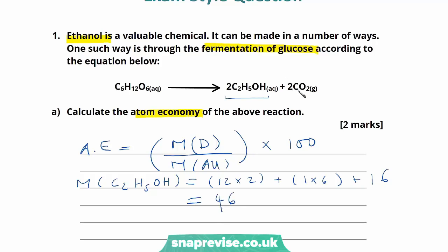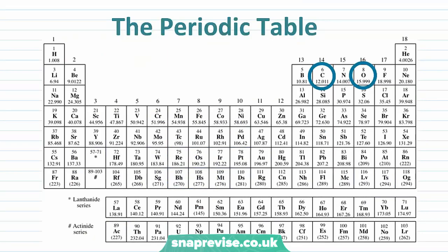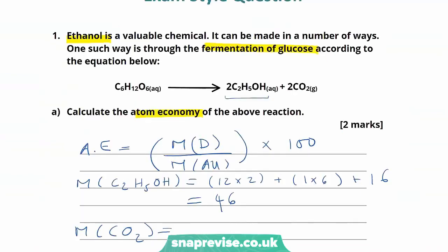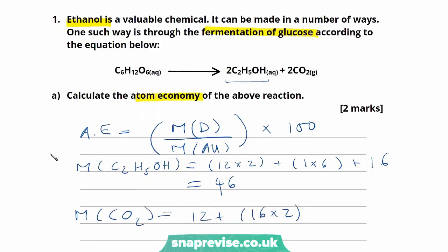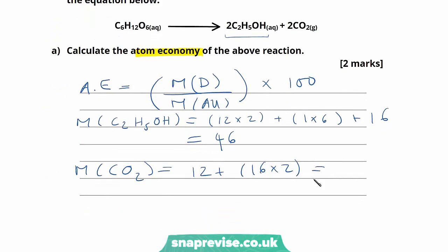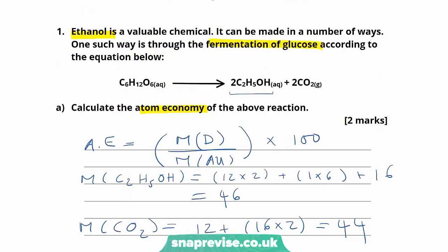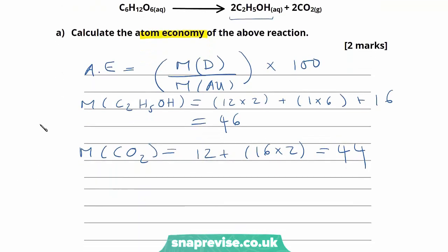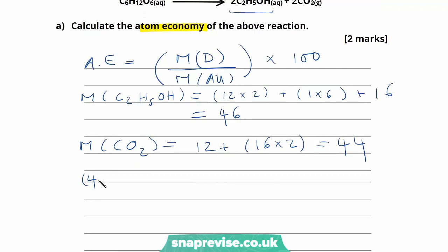We also calculate the molar mass of carbon dioxide, CO₂. Carbon has a molar mass of 12 and oxygen 16, so that's 12 plus 16 times 2, giving a total molar mass of 44. Looking at the reaction equation, we're producing 2 moles of ethanol and 2 moles of carbon dioxide, so we multiply both values by 2: 46 times 2 plus 44 times 2, giving us a total of 180.